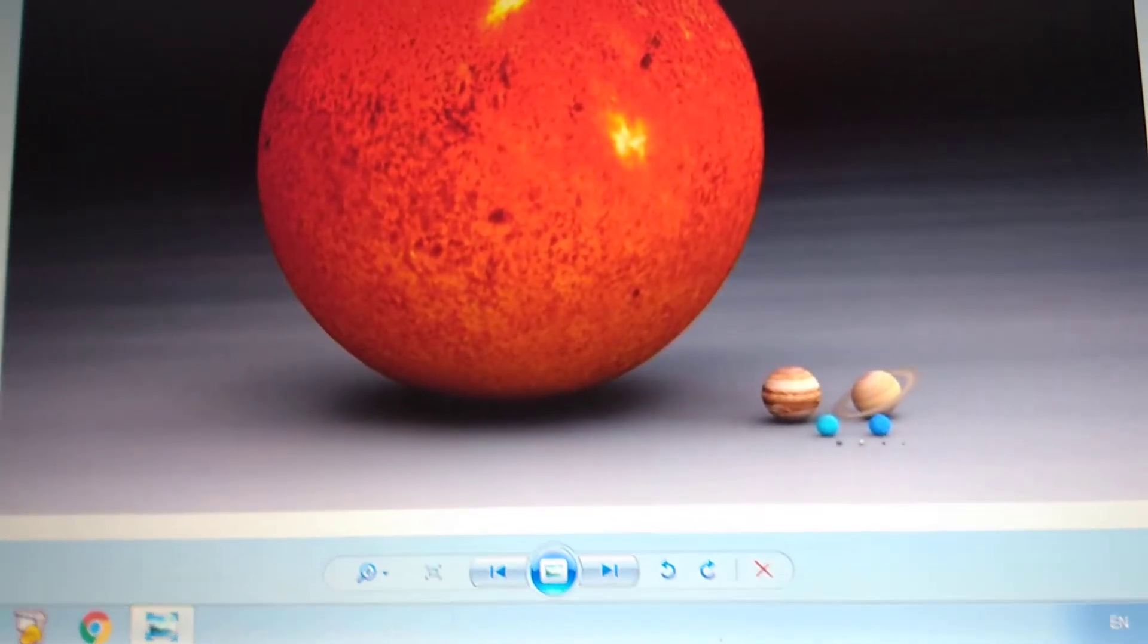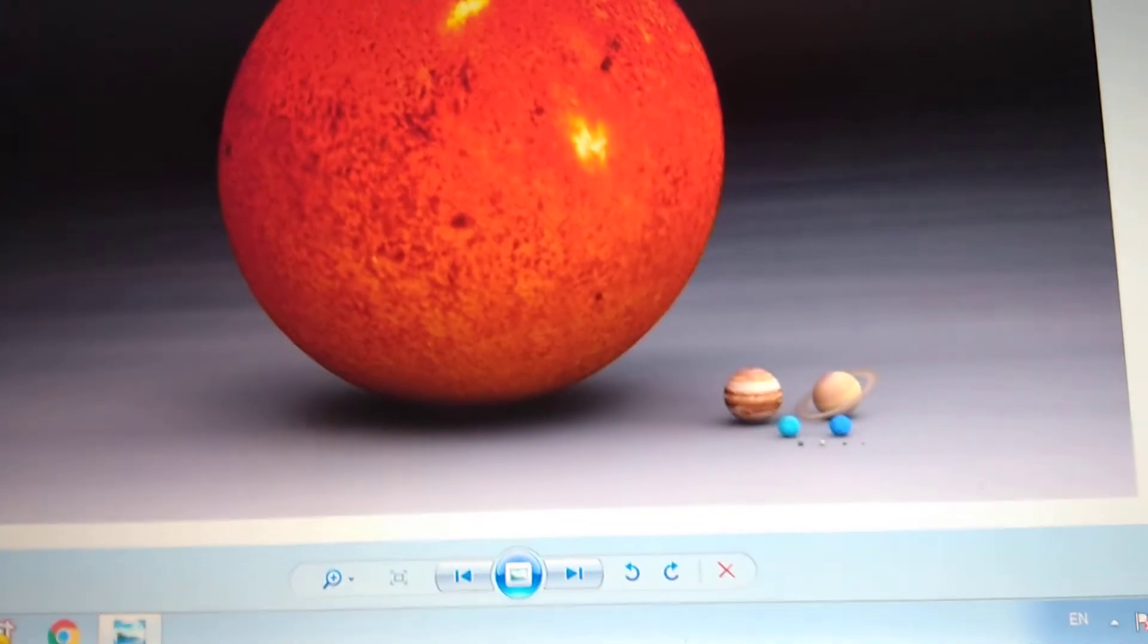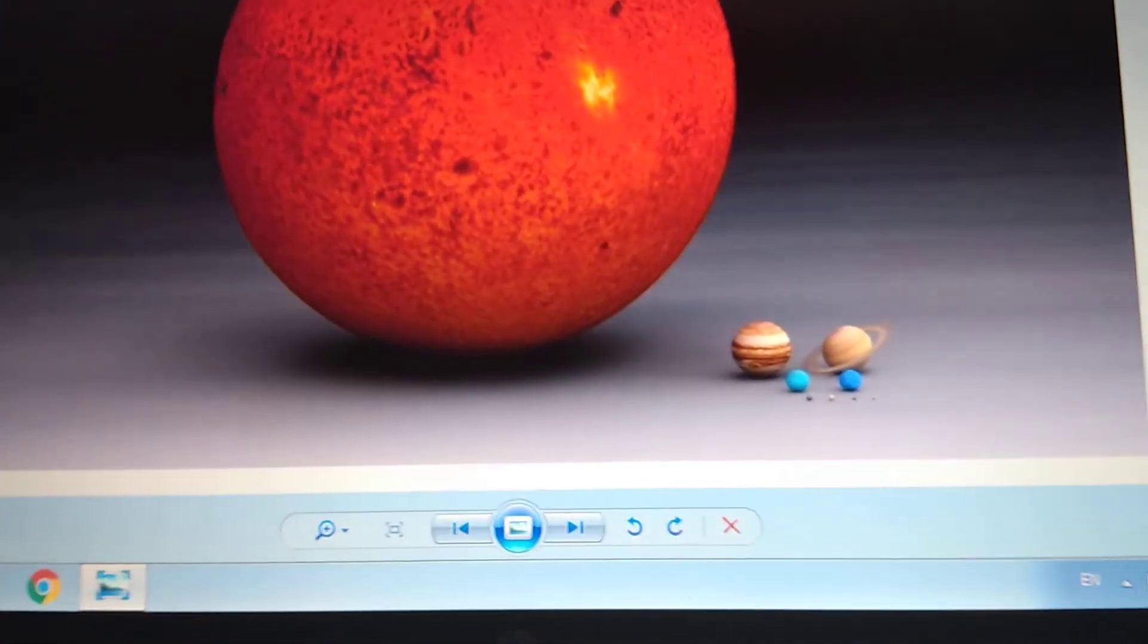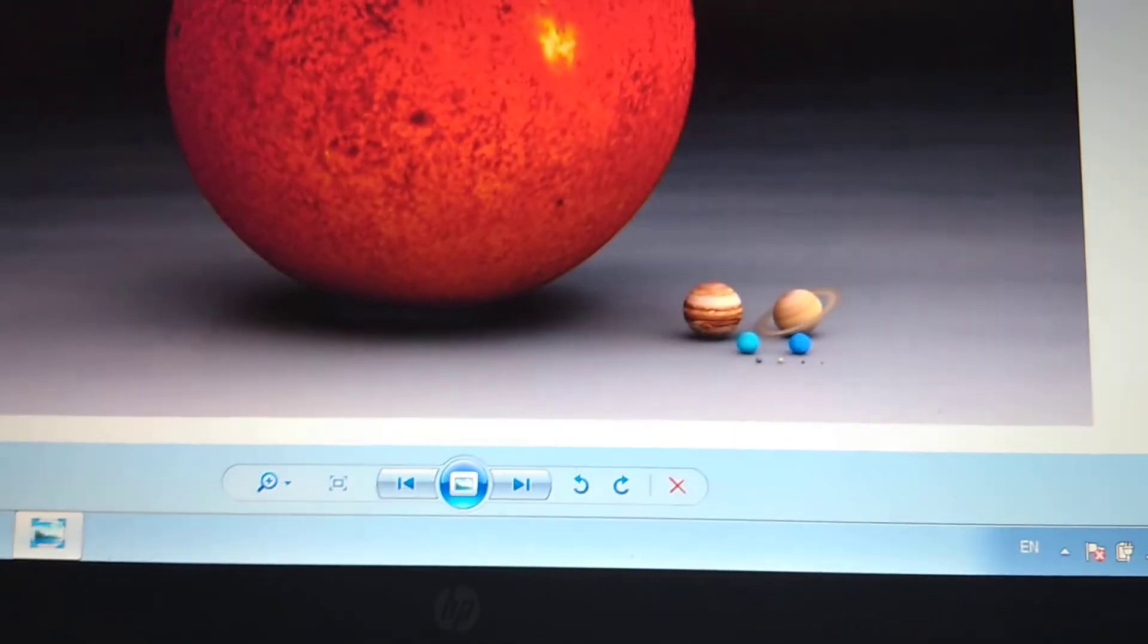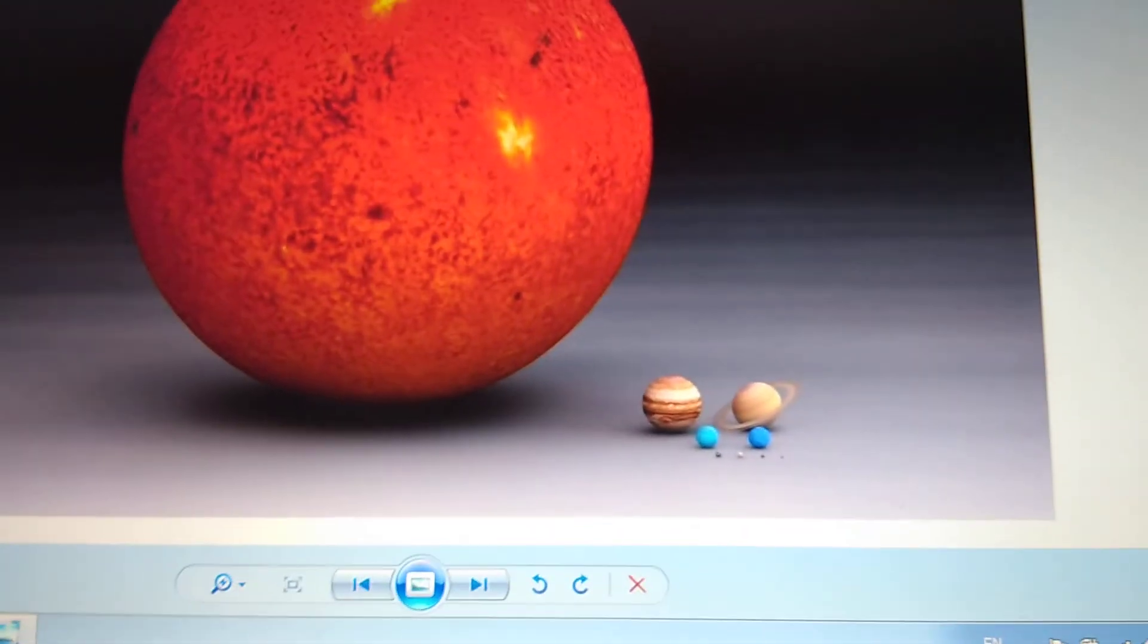Next is Mars. Mars is the second smallest planet in the solar system with 3389 kilometers. Next is Venus, 6051 kilometers.